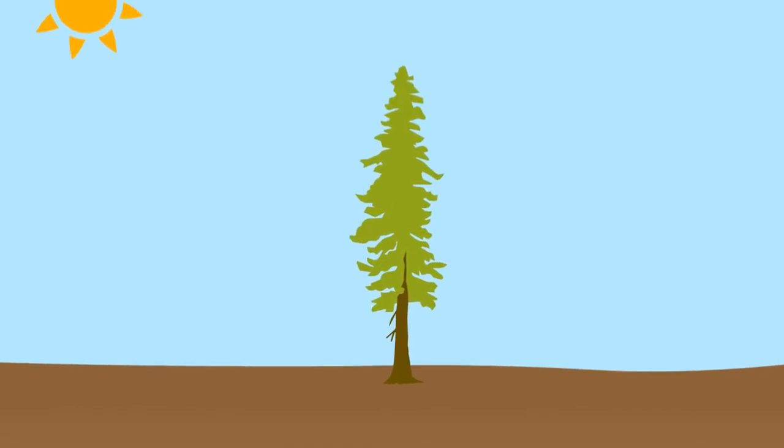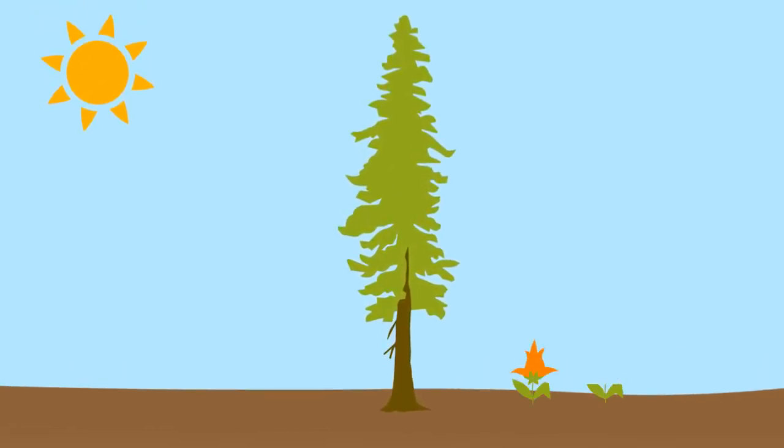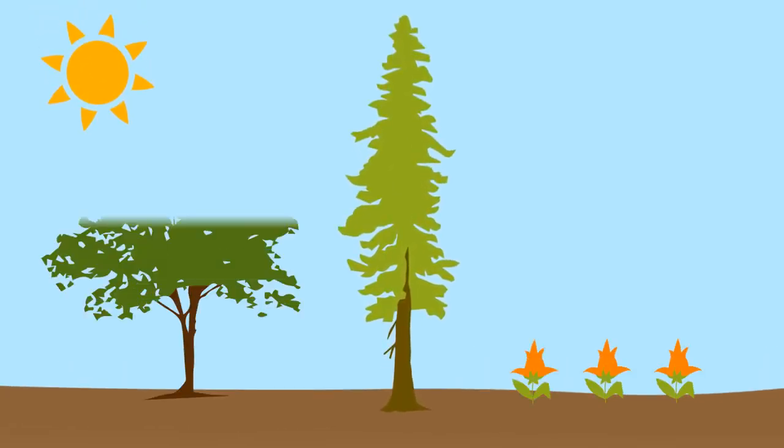From a tiny seedling to a tall tree making seeds of its own, plants grow by pulling carbon out of the air. So in the end, plants really are made out of thin air.